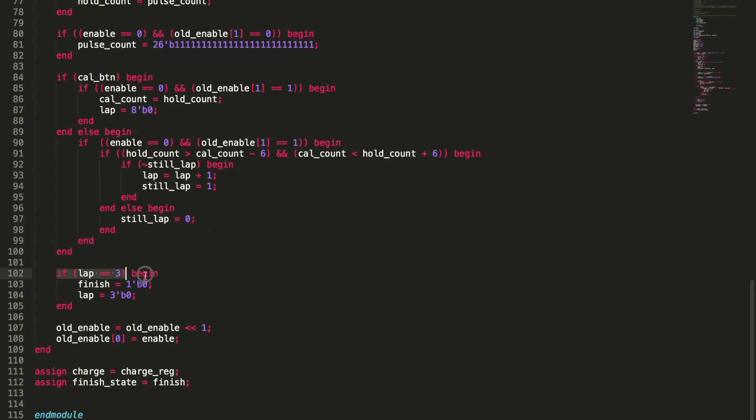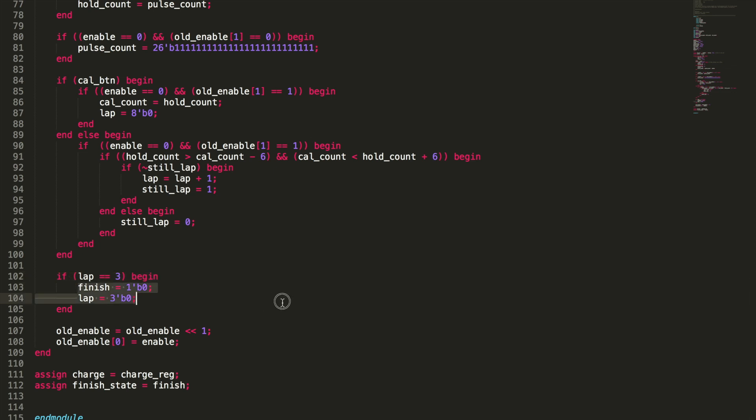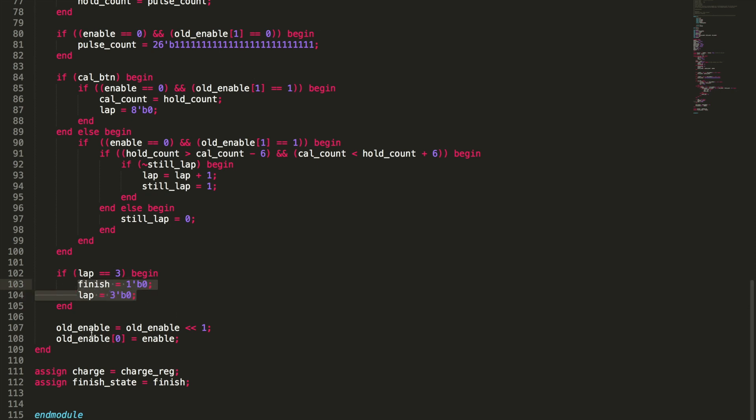Then we're going to say, if the laps equal three finished equals one, we're outporting that or outputting that, and then laps, we're going to set that back to zero just in case we wanted to restart this whole thing. And then down here, we've got old enable. We're shuffling that back. So we're filling up this register with old enable, and then we're going to take the new enable, and we're going to set that into the very first spot of old enable or that register bank there. Now at the very end, we're going to set charge is equal to charge register. So that was where we were telling it to charge or not to charge. And then we're going to set our finish state, which is an output to finish so that we can output that to our top module.